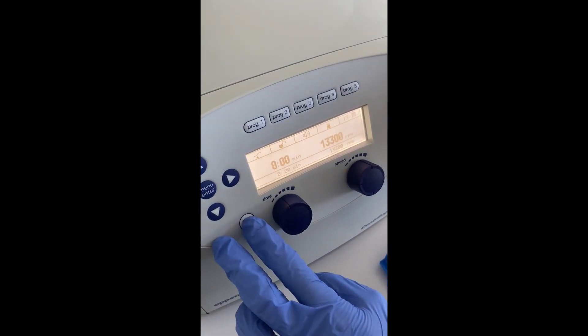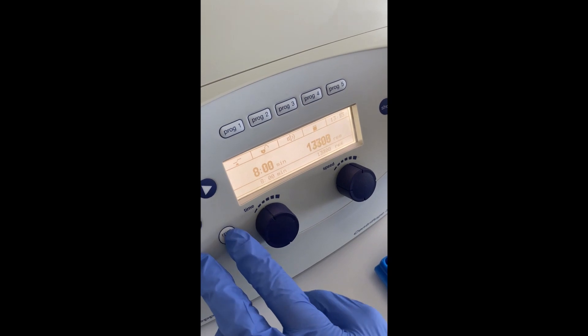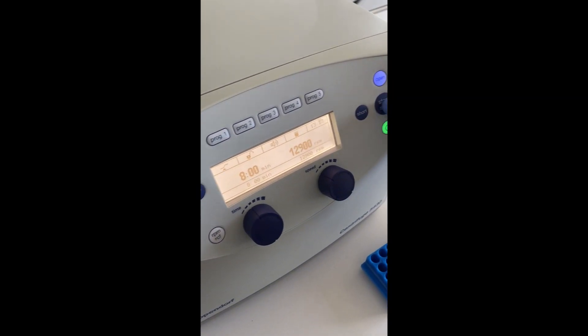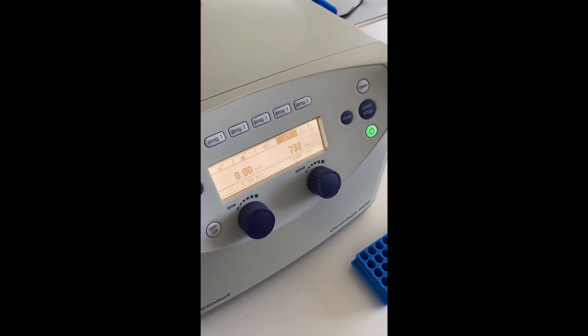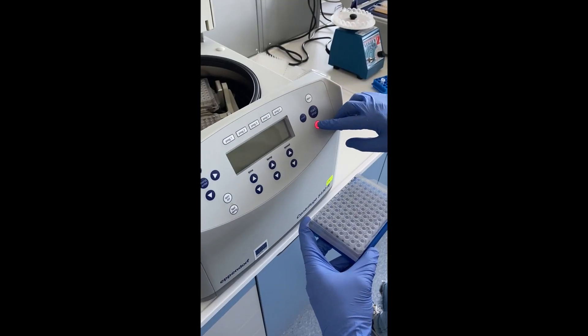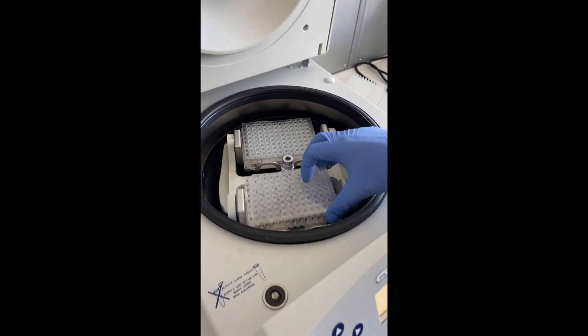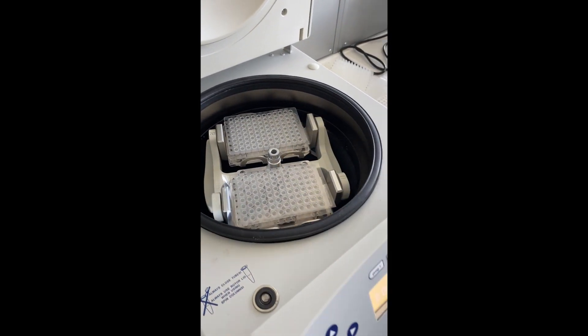We can set the number of revolutions per minute as well as the centrifugation time on the centrifuge according to our needs. For centrifugation of microtiter plates, we use a special type of centrifuge, but its principle of operation is the same as in the previous centrifuge.